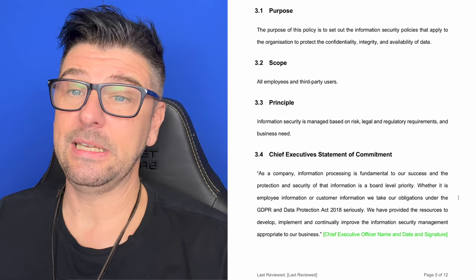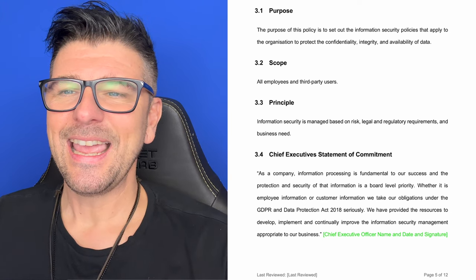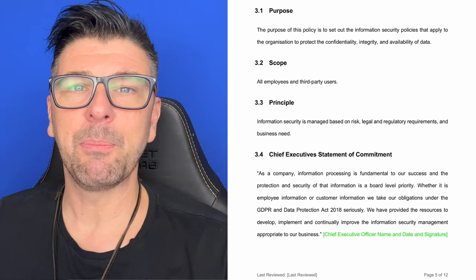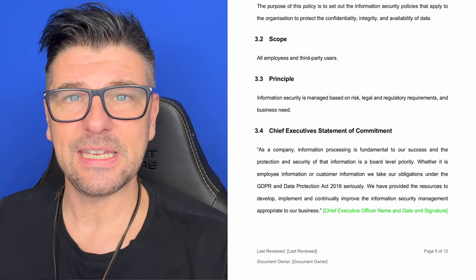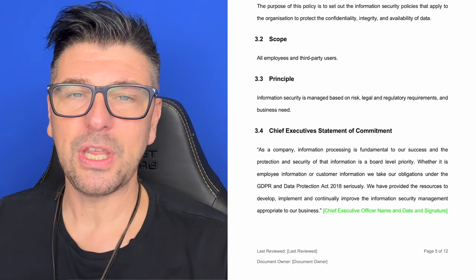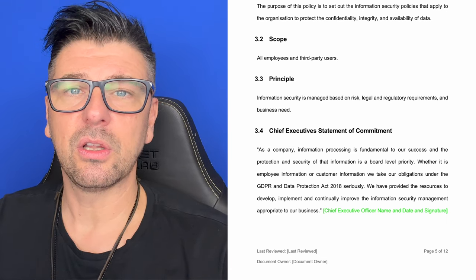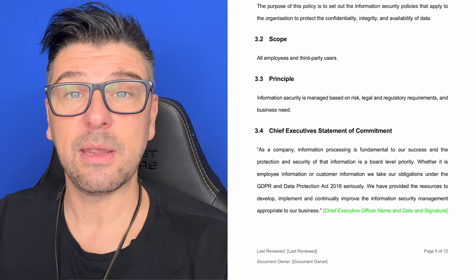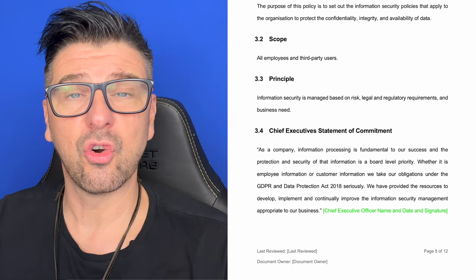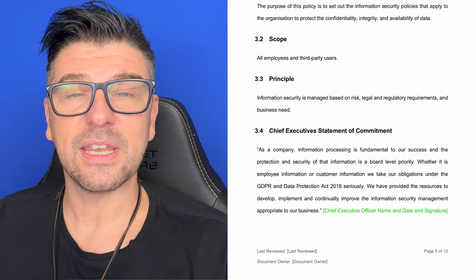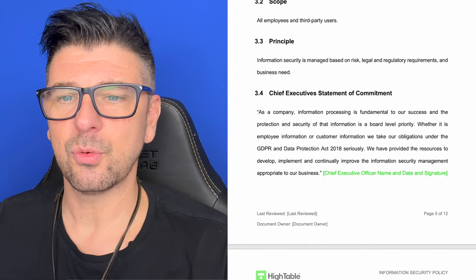Let's dig deeper into this information security policy. The purpose of this policy is to set out the information security policies that apply to the organization to protect the confidentiality, integrity and availability of data. The scope is all employees and third party users. What we're articulating here is employees of the organization, but also other people that work with us — that could be contractors, consultants, or suppliers. So the scope of this policy applies to all of those.